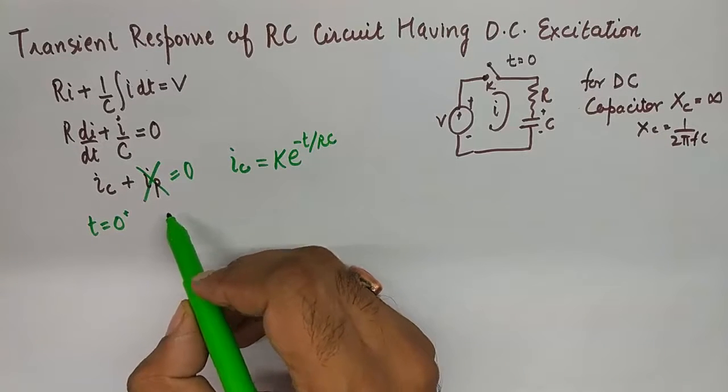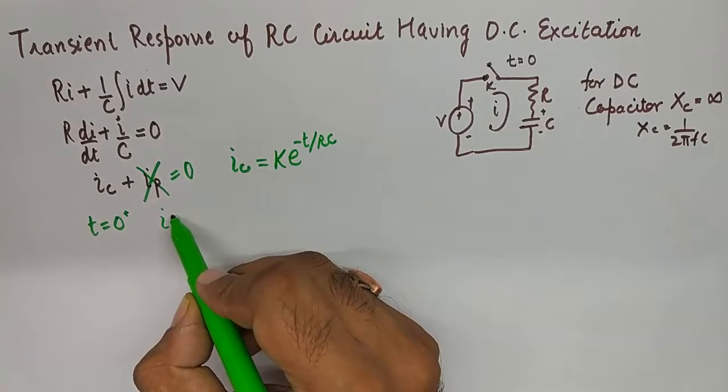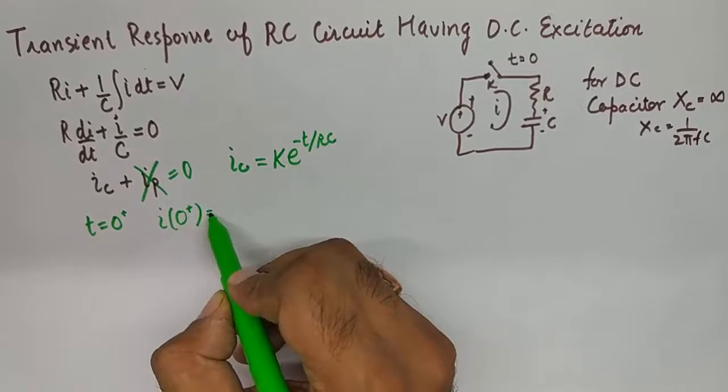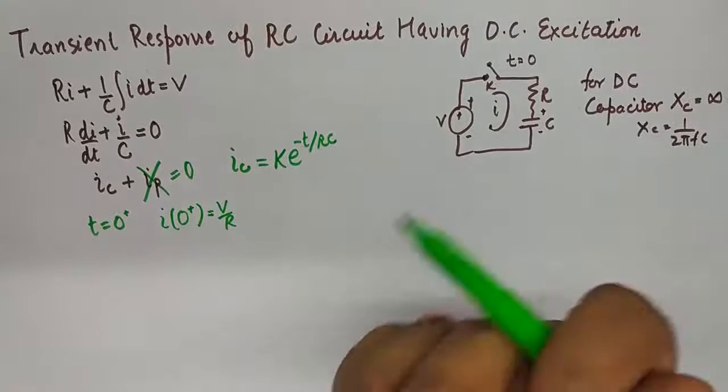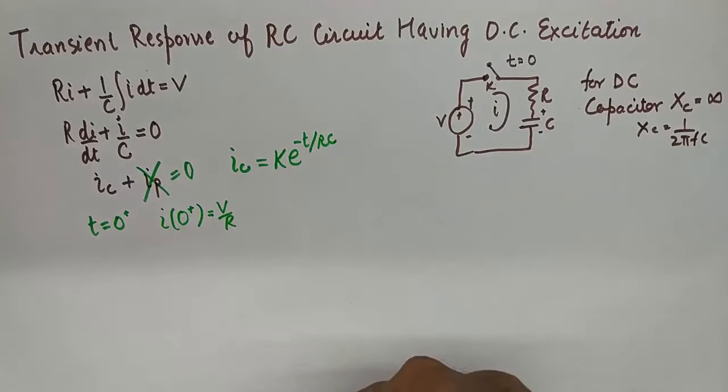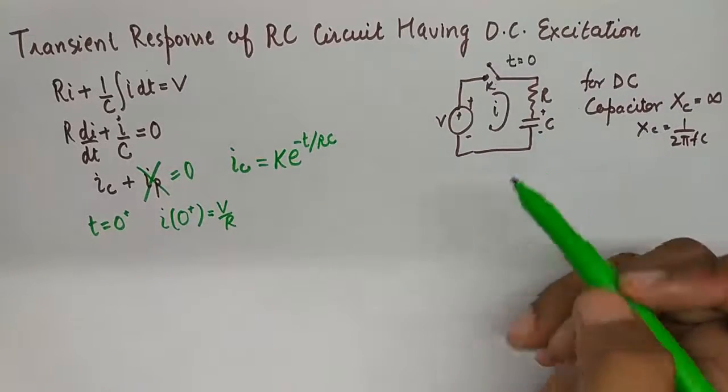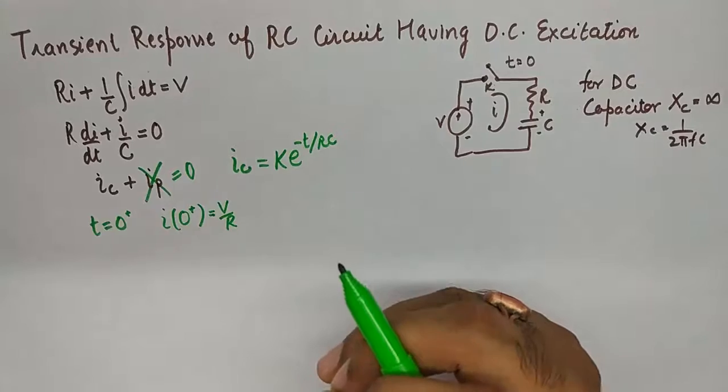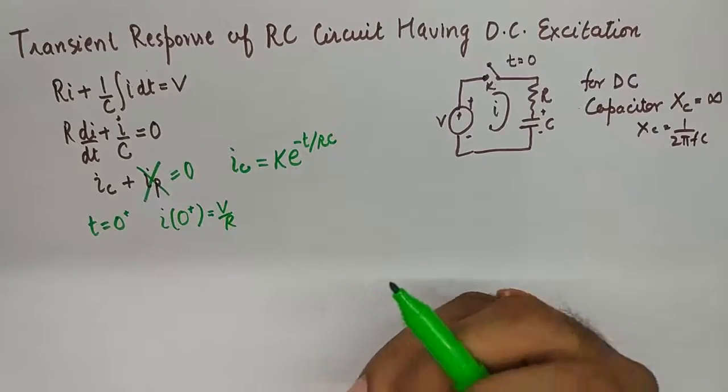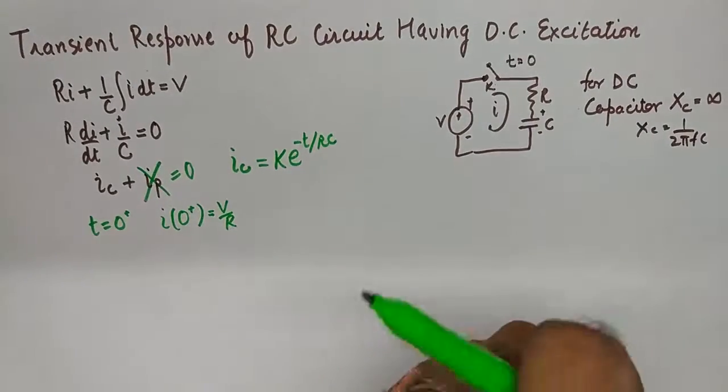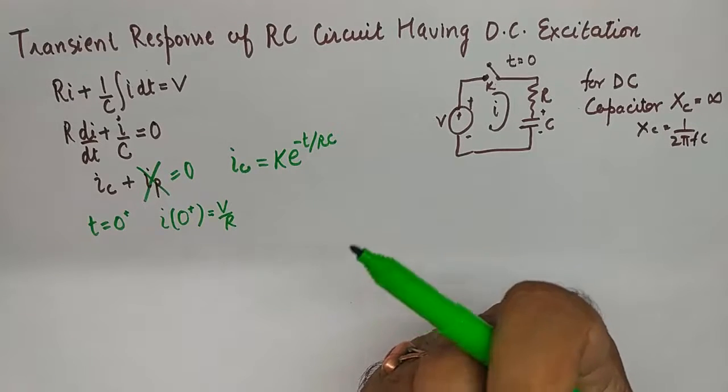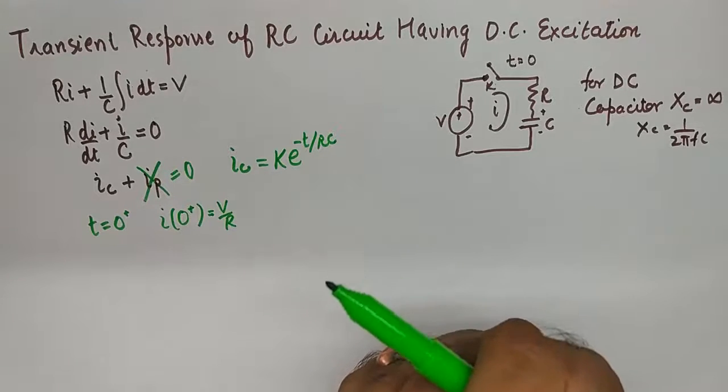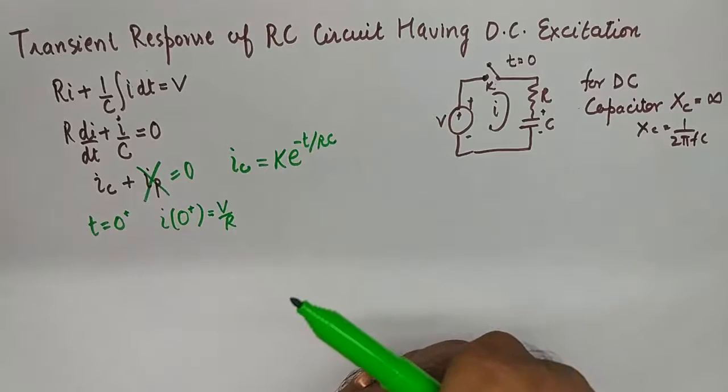Or I can say the current at 0+ time equals V/R. Eventually it starts to decrease as soon as the capacitor realizes that some amount of charge is being built upon its plates and a DC is connected to it. And it starts to formulate an equal and opposite amount of voltage across its plate so as to block the entire current.